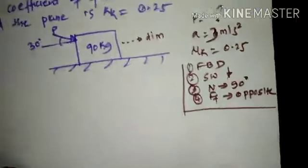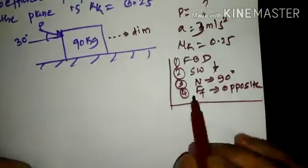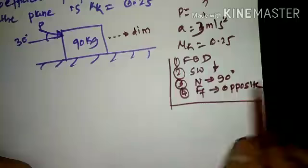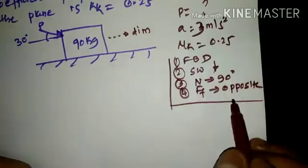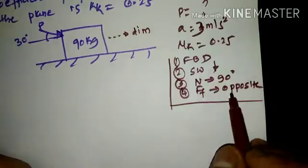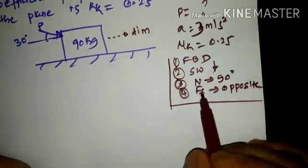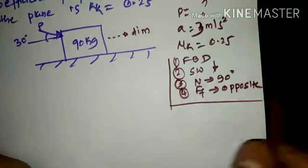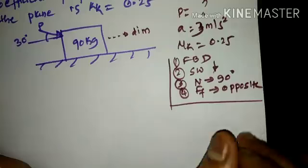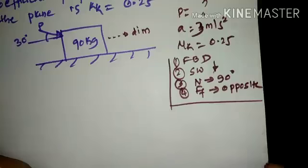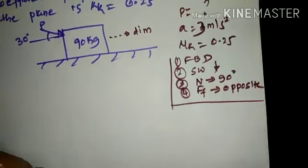The frictional force will always be opposite to the motion of the body. If the body moves towards the right-hand side, frictional force will be towards the left-hand side. Similarly, if the body moves towards the left, frictional force will be towards the right. This is independent of whether the body is subjected to acceleration or retardation.